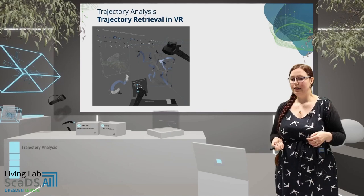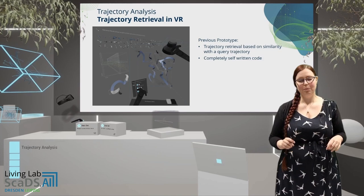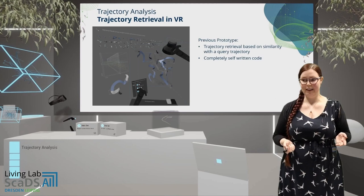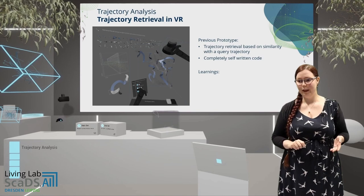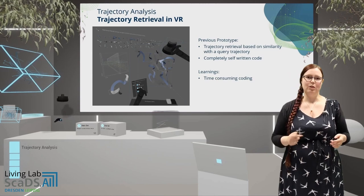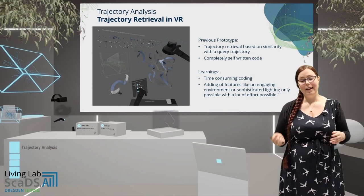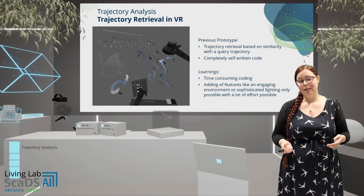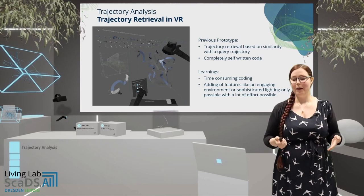Here is a prototype that was presented in the past. It is self-coded based on OpenGL and provides trajectory retrieval based on similarity to a query trajectory. You can see the query trajectory, the filtered data set, and some additional overview of the filter result. The learnings from this prototype were that everything was implemented myself — I learned a lot about the rendering pipeline, but it was a slow development process. And adding features like an engaging environment or sophisticated lighting is only possible with a lot of effort, and this does not really contribute to the prototype purpose itself.